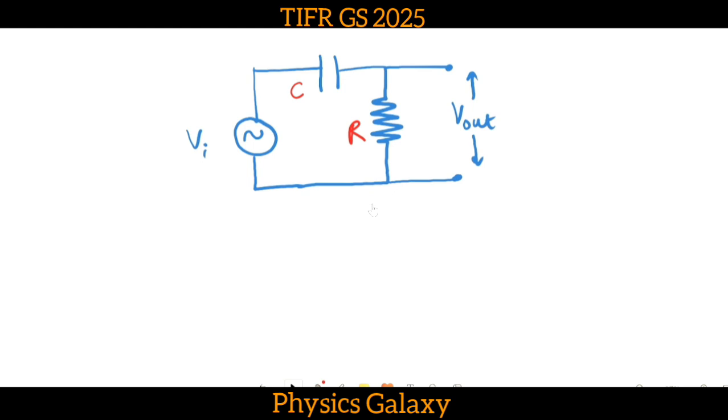This was our RC circuit and the functional form of V_out was given as V_out equals V_i times A, some factor times sin of 2πft plus φ. Let us find what is the value of A.